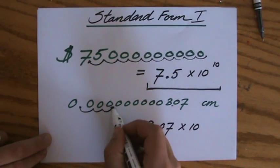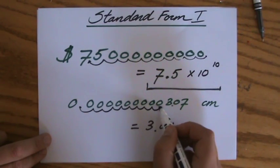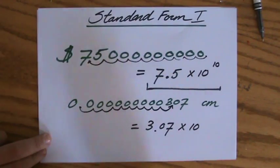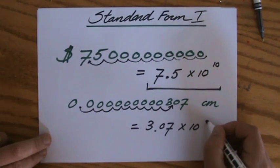It moved one, two, three, four, five, six, seven, eight, nine. Oh, 10 again. That's just a coincidence. So to the power 10.